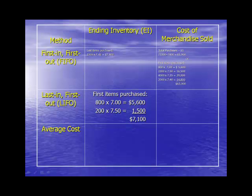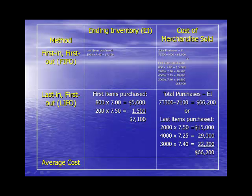The next method is last in, first out, or LIFO. Under LIFO, ending inventory is made up of the first items purchased, because the last ones go out first. In this case, we have 800 units at $7.00 each and 200 units at $7.50 each, for a total ending inventory of $7,100. Cost of merchandise sold can be calculated two ways: total purchases minus ending inventory, or based on the last items purchased. Total purchases of $73,300 minus $7,100 ending inventory gives $66,200. The last items purchased were 2,000 at $7.50, 4,000 at $7.25, and 3,000 at $7.40, for a total cost of $66,200.